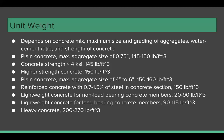For plain concrete with a maximum aggregate size from 4 to 6 inches, the unit weight runs between 150 to 160 pounds per cubic foot, with an average value of 155 pounds per cubic foot.